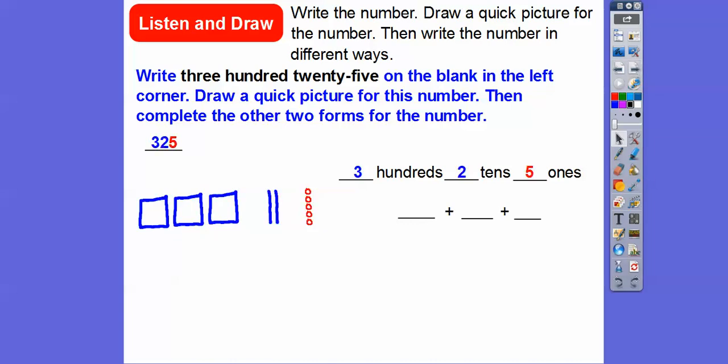And then remember 300 is three with two zeros. So there's our 300. Two tens is two with one zero, so two tens, and then five ones.